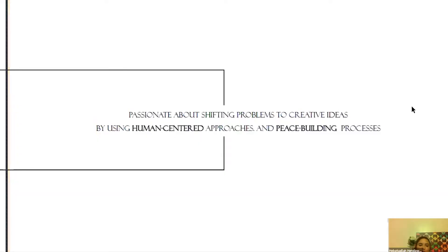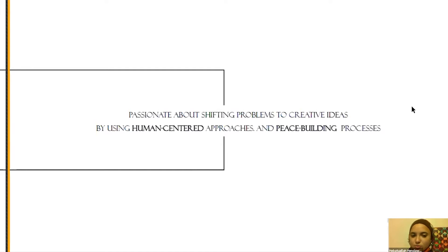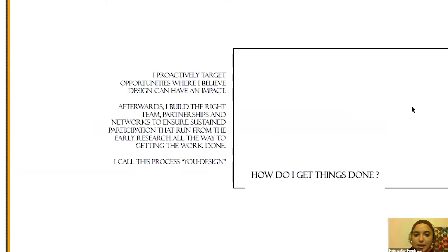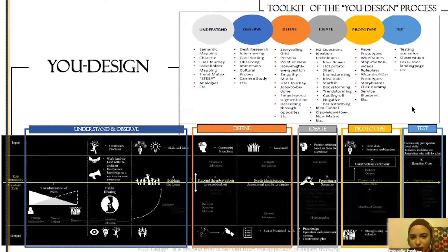Basically what I do is pinpoint the challenge or problem in a certain community, transform it into a creative idea, and implement that idea with the community themselves using human-centered and peace-building processes. My background is architecture, but I graduated from the Faculty of Fine Arts, so I have always been integrating arts into these creative processes. I can go back to U-Design if someone wants more details, but here I was comparing the two processes of U-Design and design thinking together.